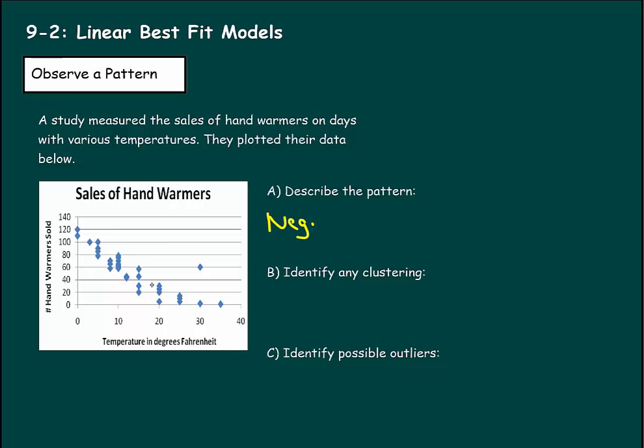And we're going to say this is pretty strong. They are all following that line pretty closely. Now we need to determine whether it's linear or not. And this is kind of like that one with the test scores, where the test score can only go to 100. Well, you can only actually sell zero hand warmers. You can't sell negative. So what's going to happen to this graph is it's going to kind of start out linear, but then it tails off and becomes kind of a curved line. So we're actually going to say nonlinear.